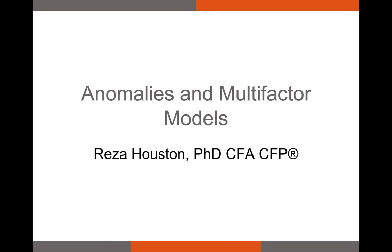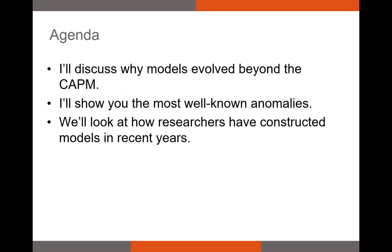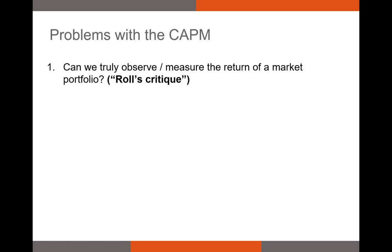Welcome to our final video in this section where I talk about anomalies and multi-factor models. In this video I'm going to discuss why models evolved beyond the CAPM to get three-factor, four-factor, and five-factor models. I'll discuss the issues with the CAPM, show you some of the most well-known anomalies you need to know before going into the work environment, and then look at how researchers have constructed these APT models.